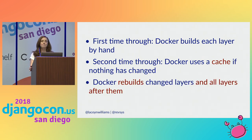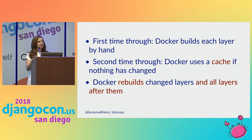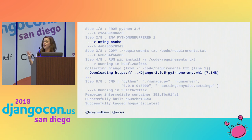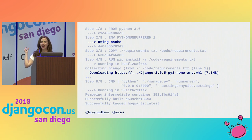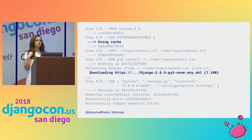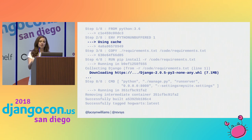But if you change a line in your Dockerfile, Docker will rebuild that particular layer and all of the layers that come after it. So if you add something new to your requirements file, Docker will use a cache for the steps before that point, but once it gets to installing the requirements it knows something has changed and will download all of those requirements fresh, then build the subsequent steps from scratch as well.